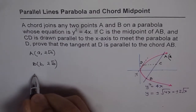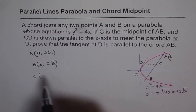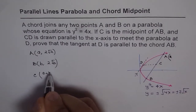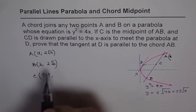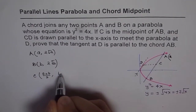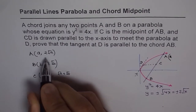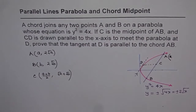Now, midpoint C will be what? Midpoint is the average of these two values. The x-coordinate of C is (A plus B) over 2. The y-coordinate will be the average of the y-values, which is square root A plus square root B — the 2 in numerator and denominator cancel. That is the y-coordinate for C.